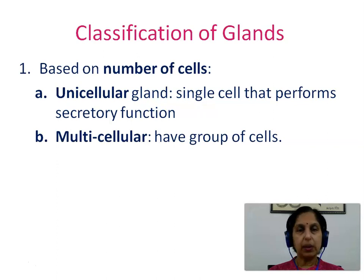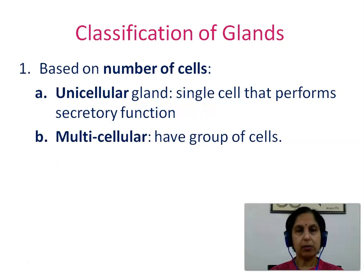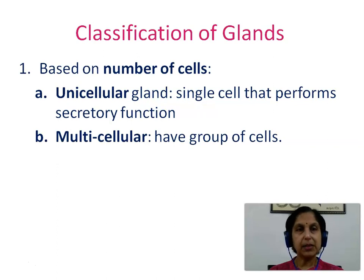Based on the number of cells, glands can be unicellular or multicellular. A unicellular gland is a single cell that performs secretory function, while a multicellular gland has a group of cells.